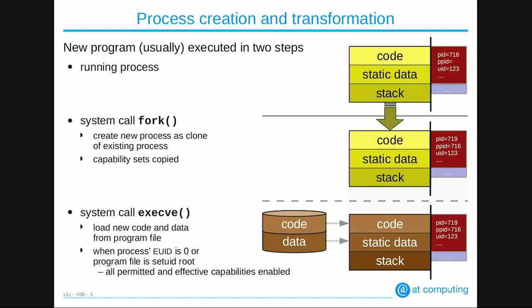What is very important for capabilities is the process management. A new process is always created via the fork system call, where a current process clones itself into a child process — an identical copy of the parent. In the process administration, the pink part represents capabilities. During a fork system call, the capabilities are copied one-to-one to the child process with no modifications.